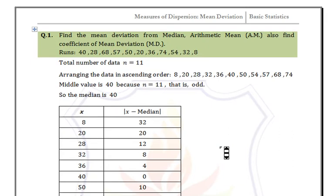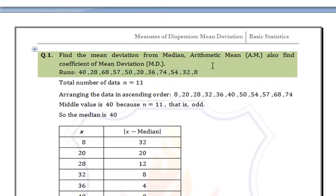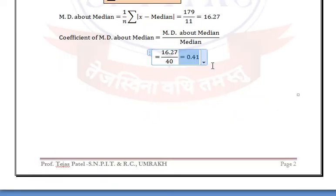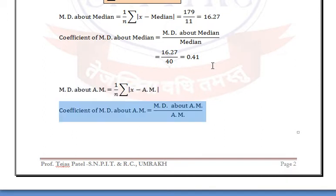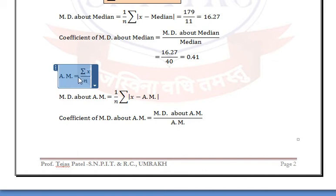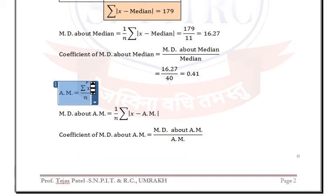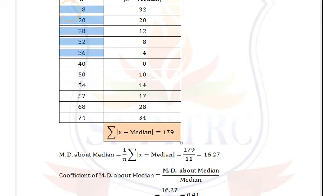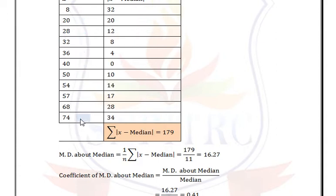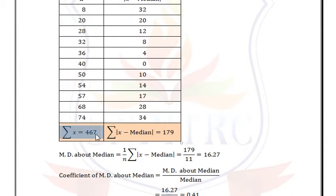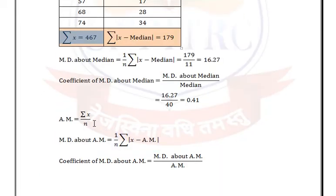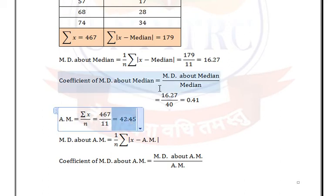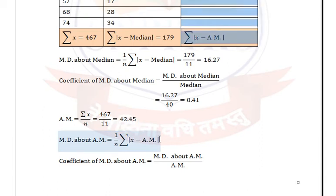Now we find mean deviation and coefficient of mean deviation from arithmetic mean. The arithmetic mean formula for only observations is Σx/n. Here Σx = 467 and n = 11, so arithmetic mean = 467/11 = 42.45.